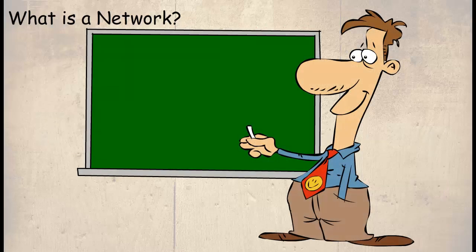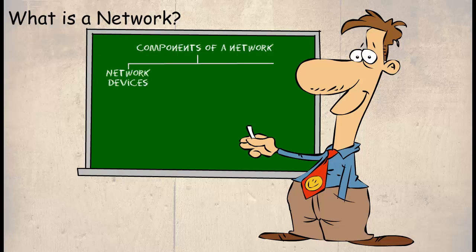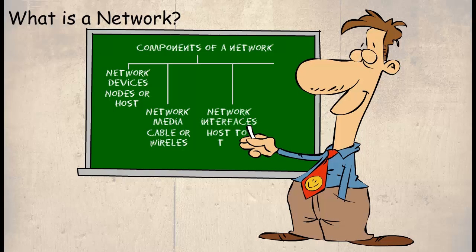So to summarize, there are four components that make up a network. These are the network devices that are referred to as nodes or hosts. The network media which is a cable or wireless media that connects the devices together. A network interface that is used to connect the hosts to the medium and translates the digital signal into a signal that can be transmitted through the medium. And a common protocol, a common language or set of rules used by the hosts to communicate.